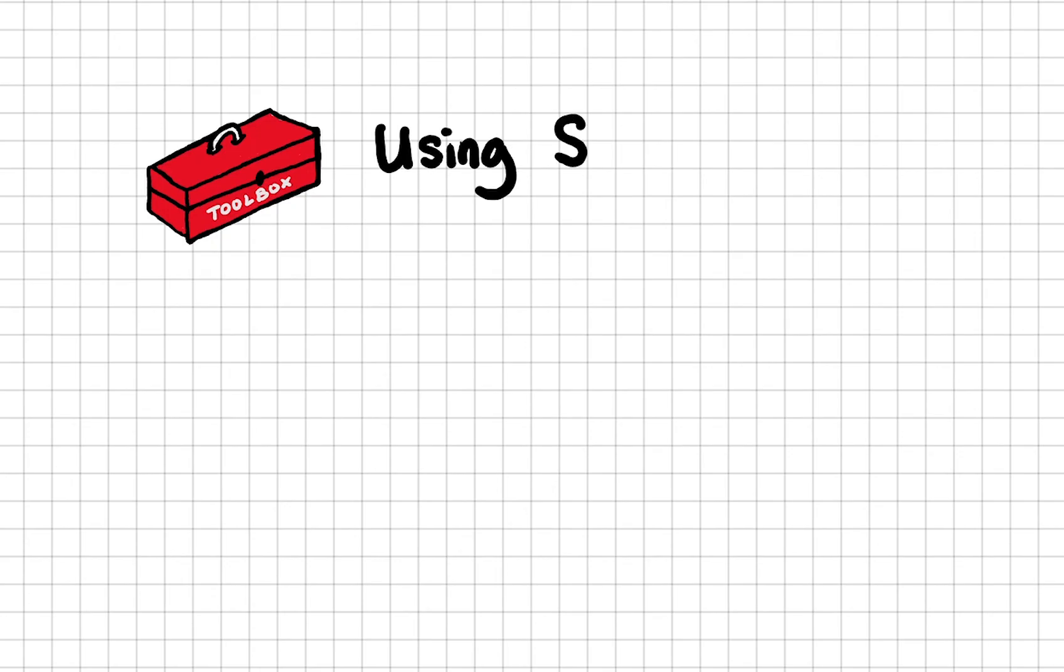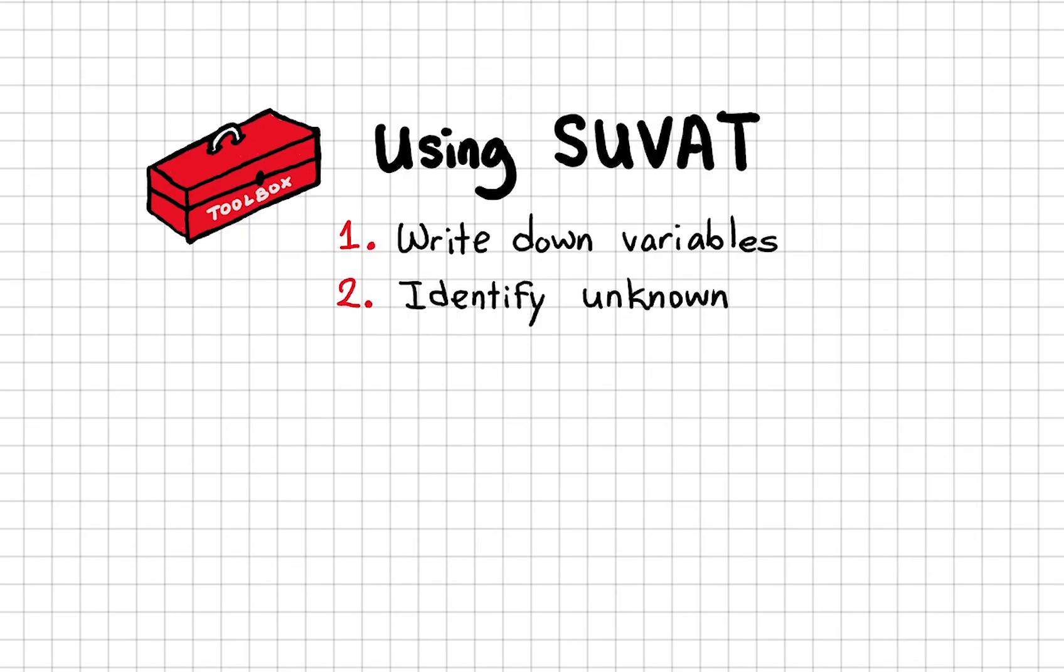Here's a summary of what to do when using SUVAT's equations. Number one: write down all the known variables given by the question. Number two: identify the unknown. This is what the question wants us to calculate. Number three: select the equation that only involves the variables mentioned in the question. Number four, if needed, you want to rearrange the equation to make the unknown variable the subject. And finally, substitute the numbers in for your calculation.